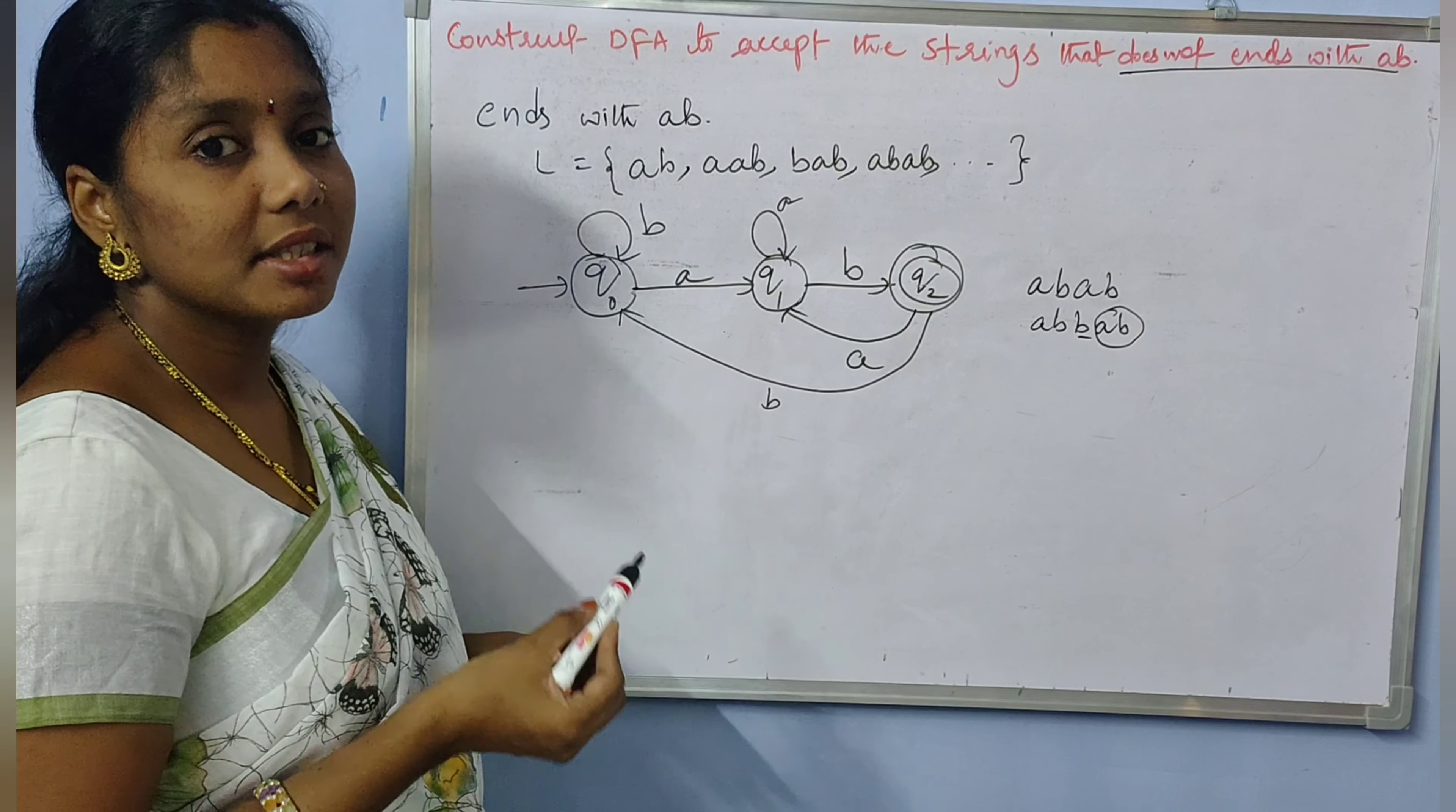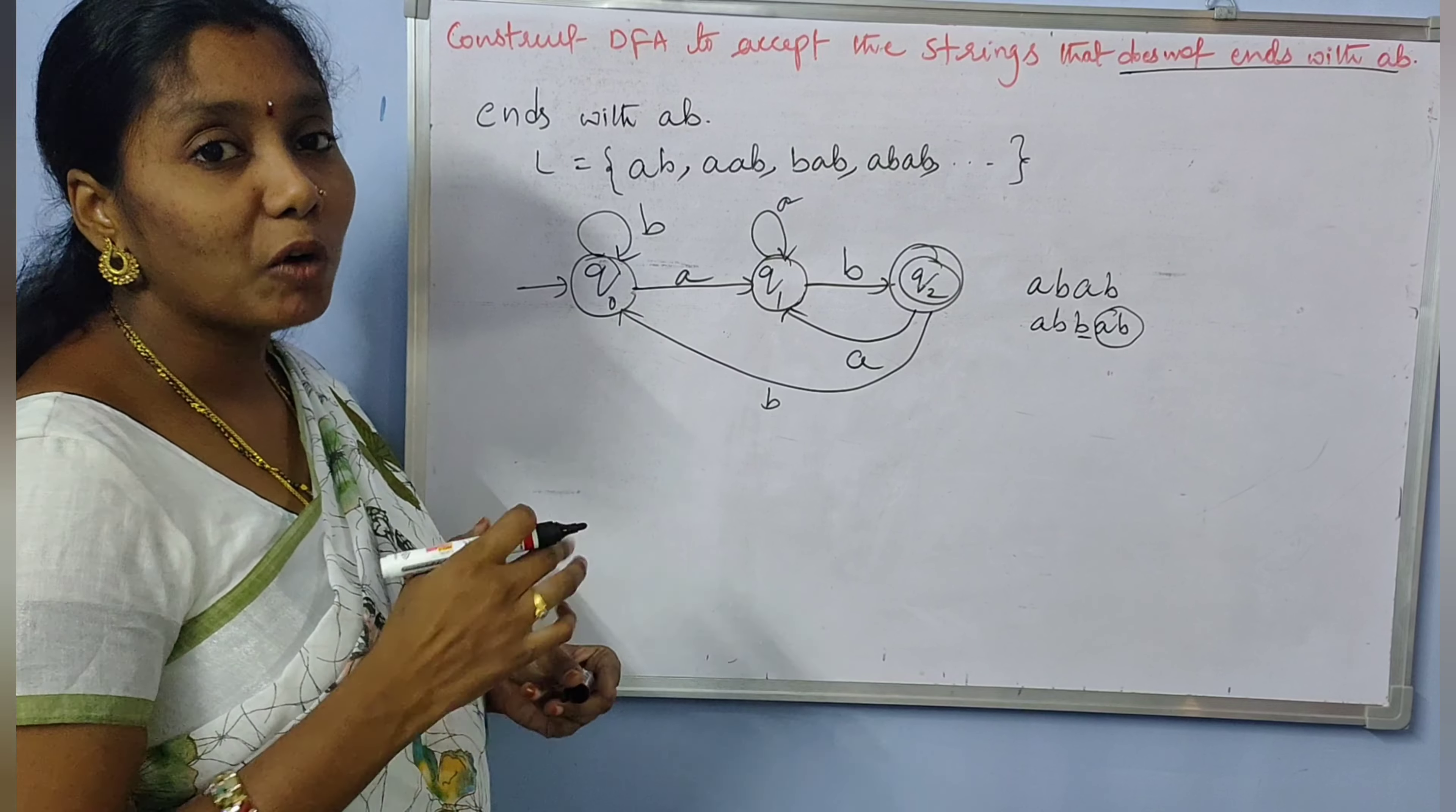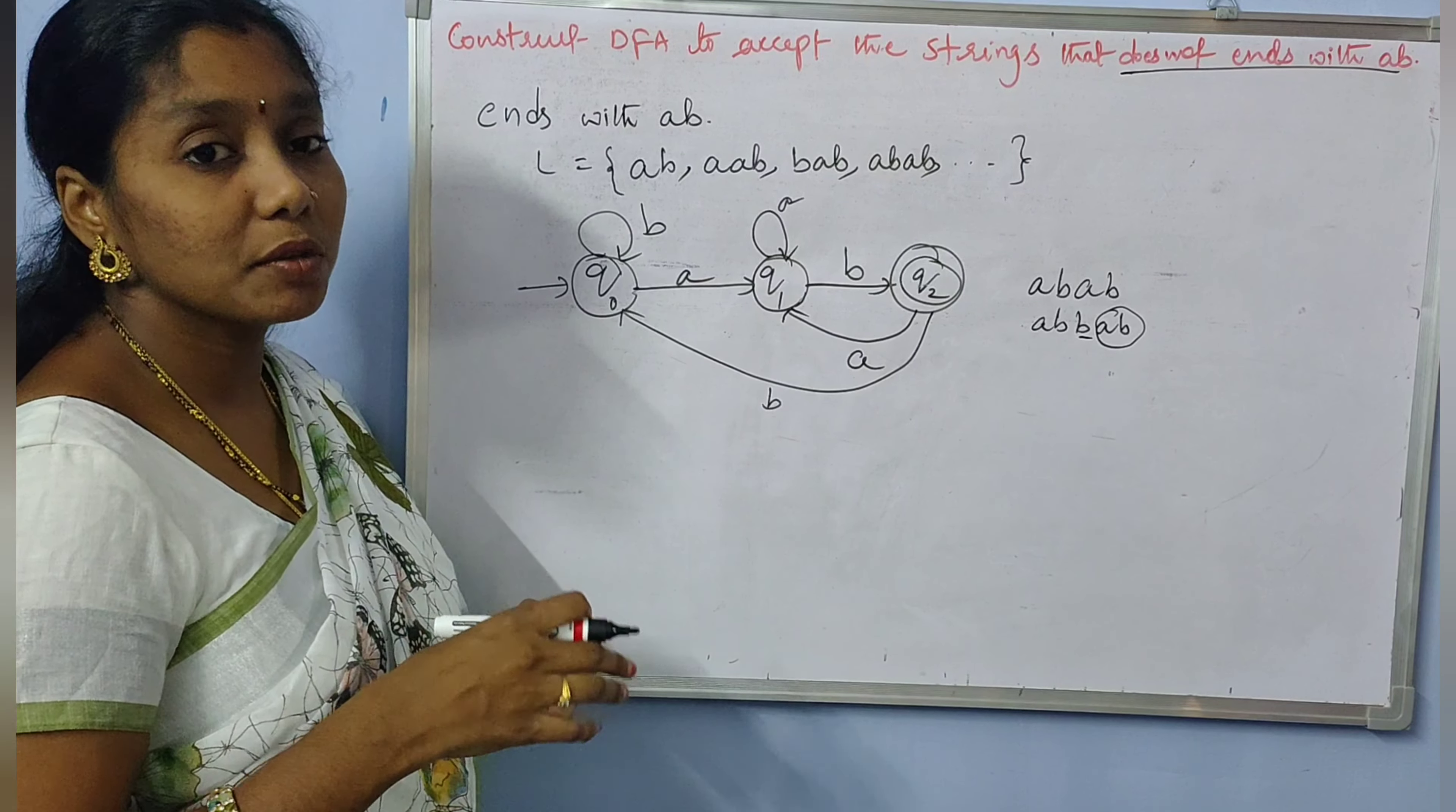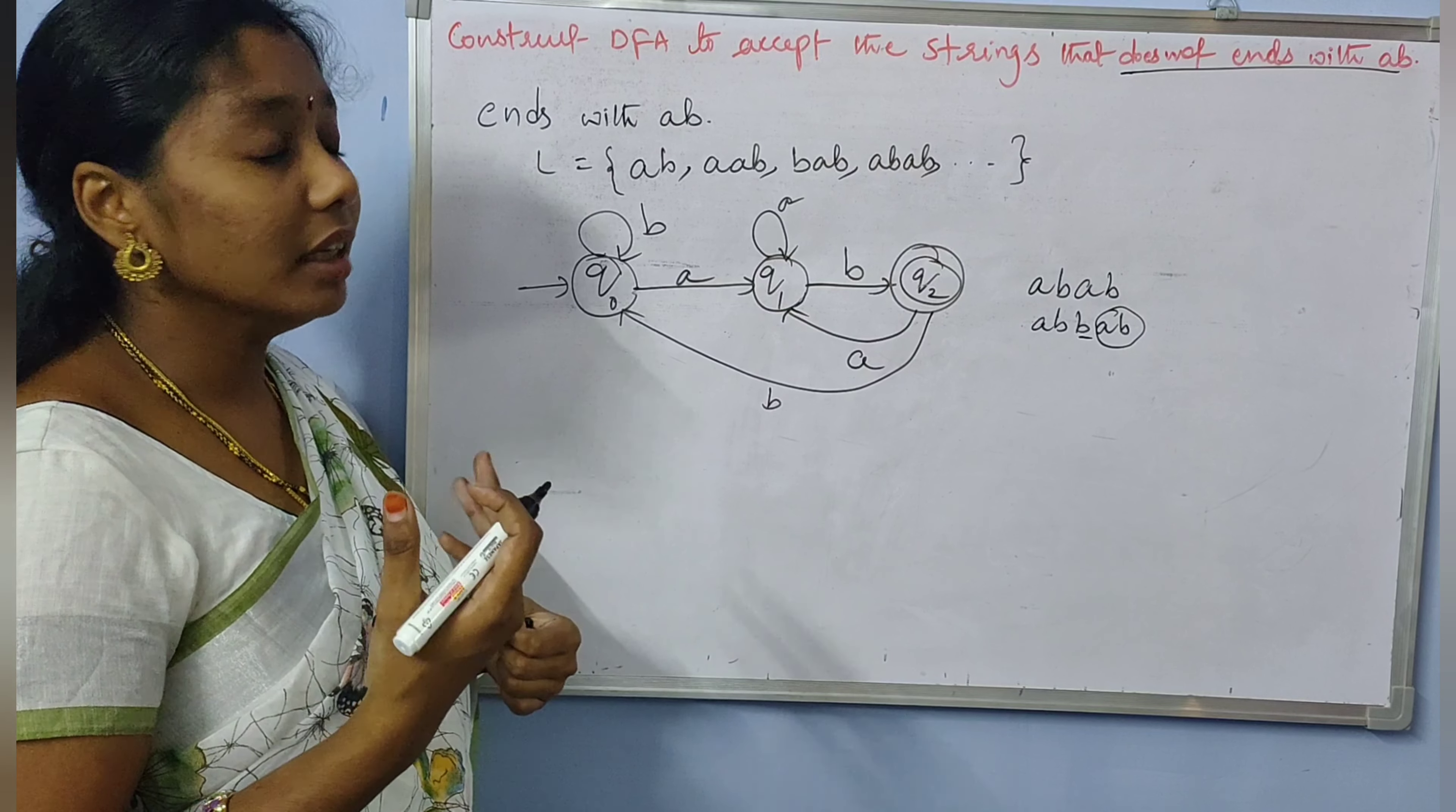So it accepts the strings that end with AB. But what we want? We want the DFA for the strings which do not end with AB.